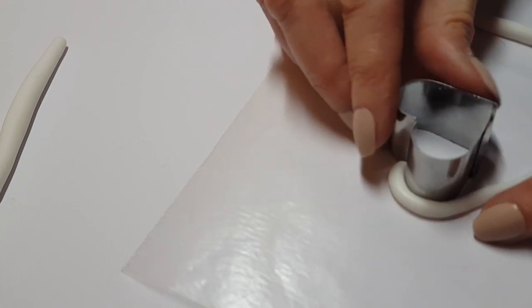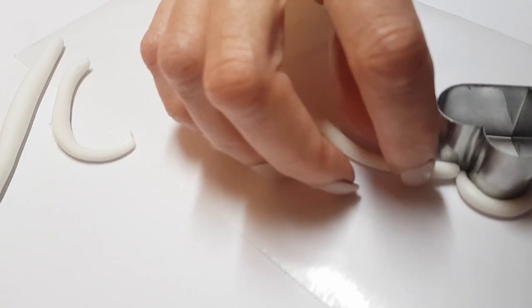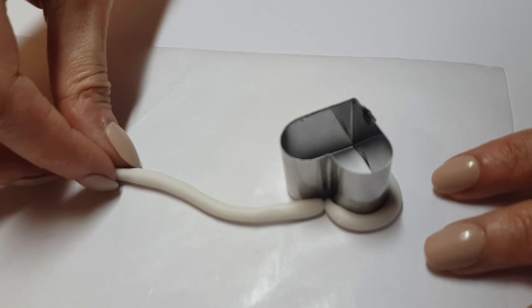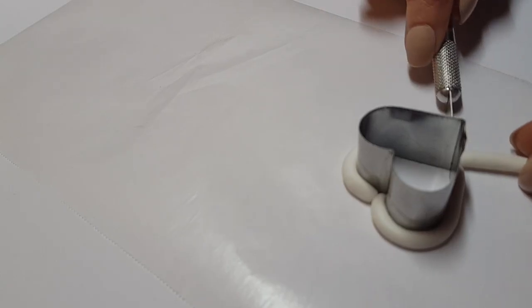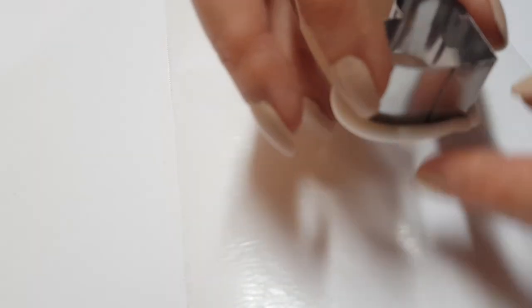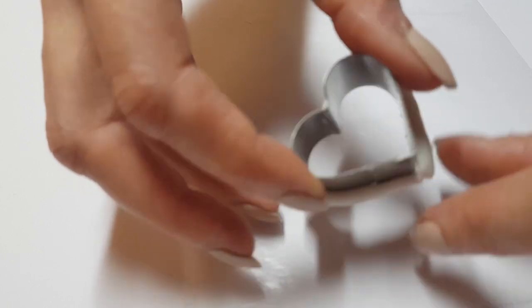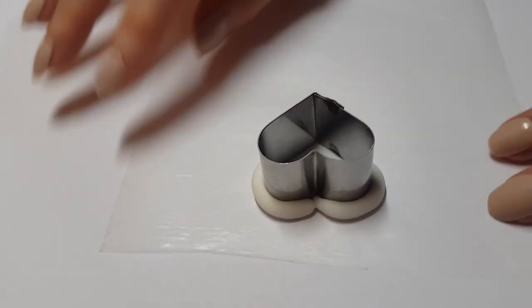For one, I'm going to be making my heart chunkier. So I'm not going to be rolling my clay super thin. But once I'm happy with how thick it looks, I'm just going to be wrapping it pretty much around my heart cookie cutter. First, I did the left part. Then I cut the excess. And then I went ahead and added the right part.